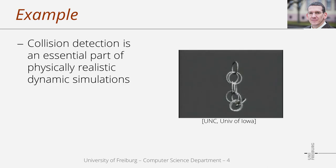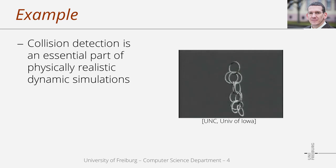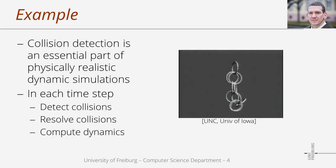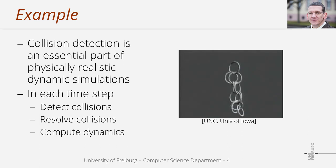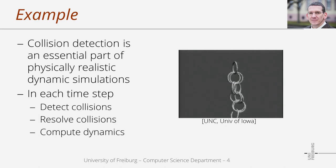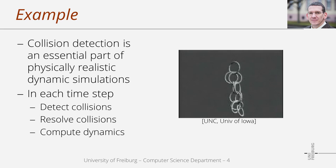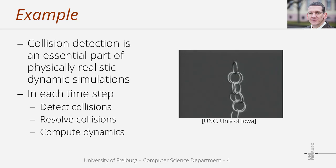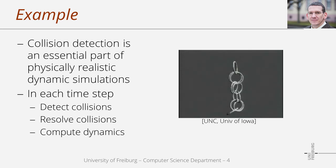In general, collision detection plays an essential role in all physically based simulations. In a typical simulation, we compute forces that change linear and angular momentum over time, which in turn change position and orientation. As part of the force computation, we typically detect and resolve collisions, computing contact forces based on the outcome of a collision detection algorithm. If we have computed all forces, we update the object states. So collision detection is an important step performed in each simulation step.